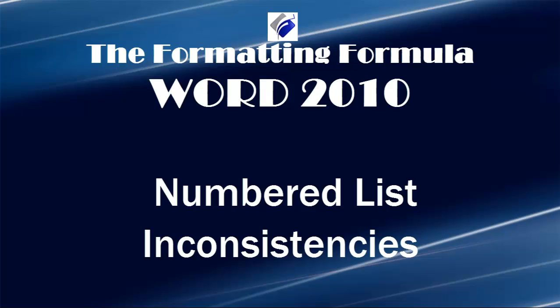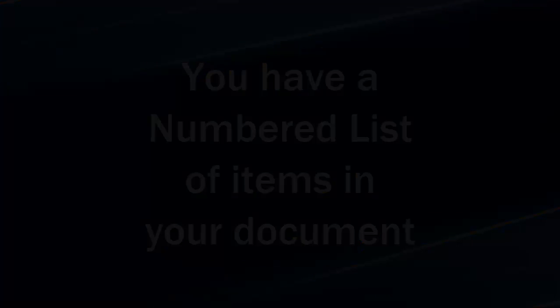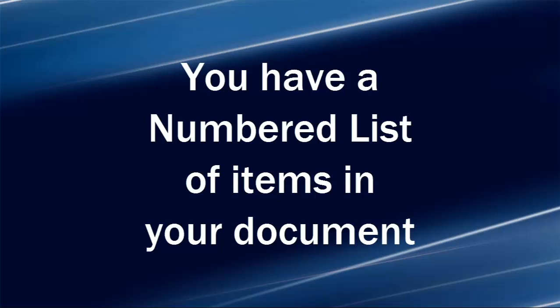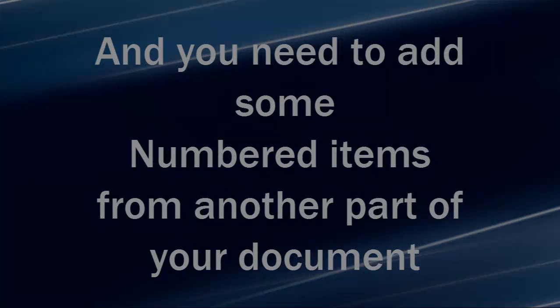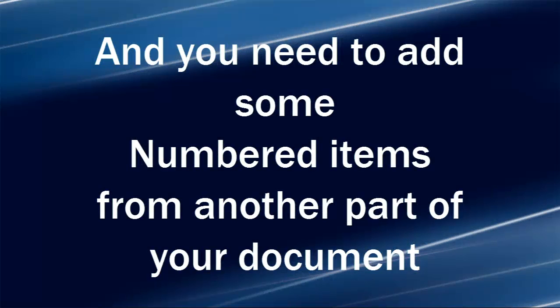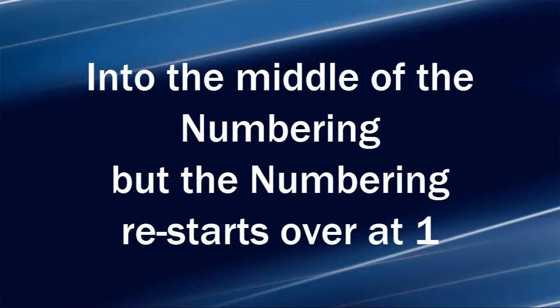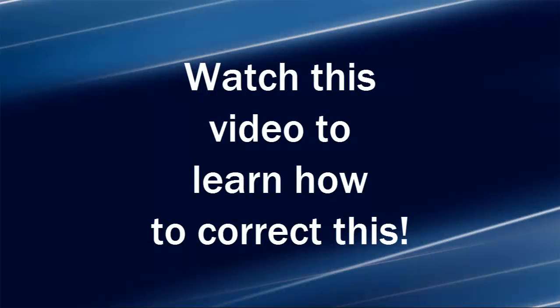Hi, Michelle Seitz here. You're watching numbered list inconsistencies. Here's the scenario: you have a numbered list of items in your document and you need to add some numbered items from another part of your document into the middle of the numbering, but the numbering restarts over at 1. Watch this video to learn how to correct this.